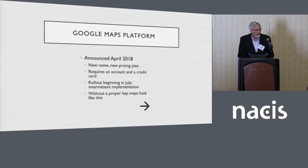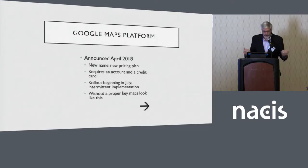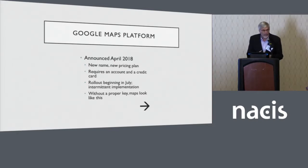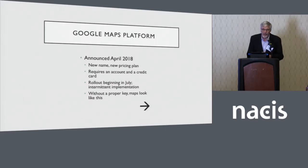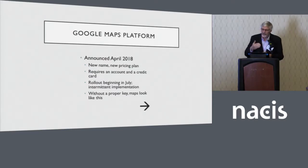The Google Maps Platform — the new name for this — was announced in April 2018. It's a new pricing plan that requires an account with a credit card. The rollout began in July and was done in an intermittent way: one day your map would work without a Google key, the next day it would not.